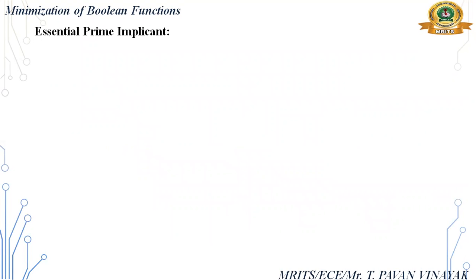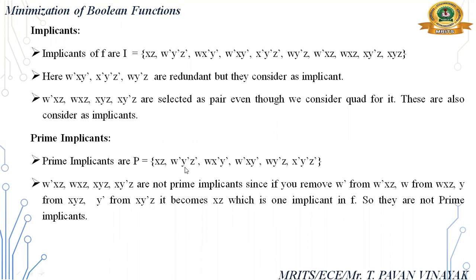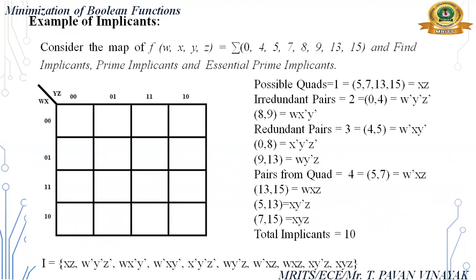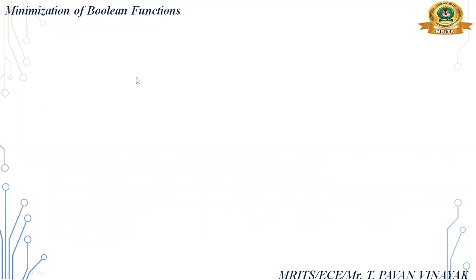Now finding essential prime implicants. Essential prime implicant is related to minterms. Out of the prime implicants, which one is essential? XZ is essential because it is formed from the quad. The minterms of XZ are 5, 7, 13, 15.